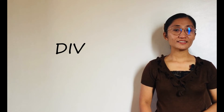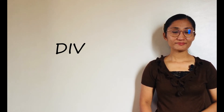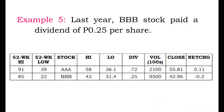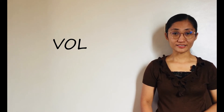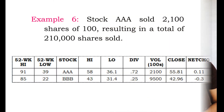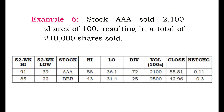Stock is the three-letter trade symbol for the company. DIV is the dividend per share from the previous year. Example 5: Last year, BBB stock paid a dividend of 25 centavos per share. VOL represents the number of shares traded in the previous trading day, in hundreds. Example 6: Stock AAA sold 2,100 shares of 100, resulting in a total of 210,000 shares sold.